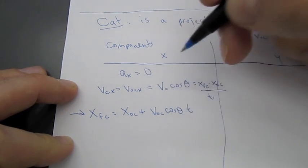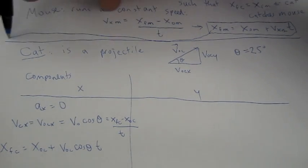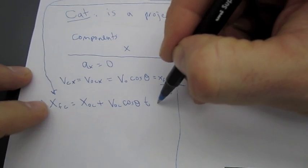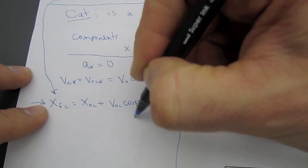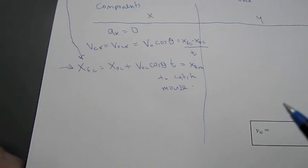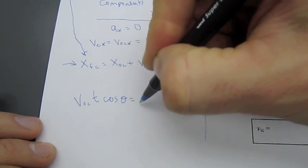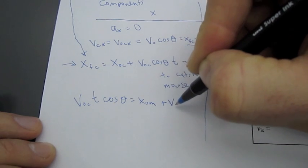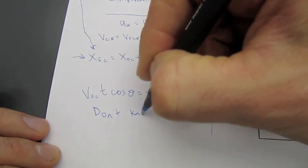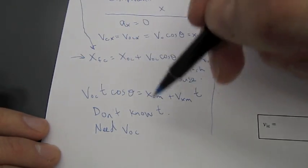And, what we're going to do is, in order for the cat to catch the mouse, we're going to set that equal to the final position of the mouse. Okay. So, we're going to say equals X final mouse to catch the mouse. And, so, we have the equation that looks like this. V initial cat times T times cosine of theta is equal to X initial of the mouse, which is the 0.8 meters, plus VX mouse times the time. And, we don't know the time, unfortunately. And, we need V0C. That's the equation we're trying to solve for.